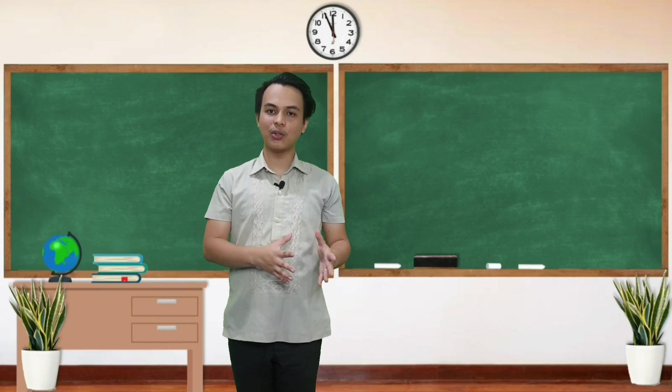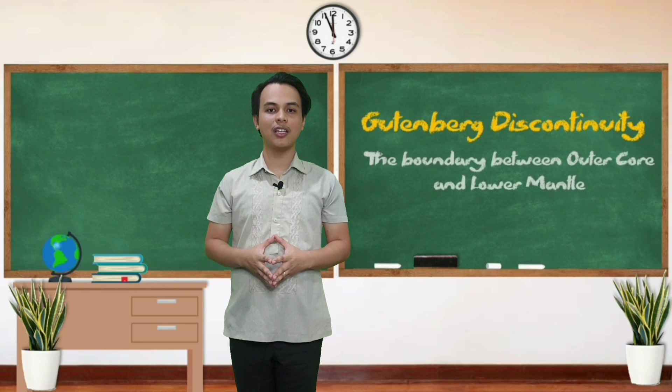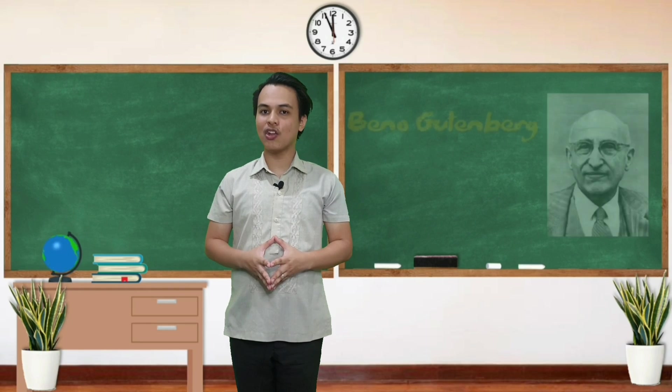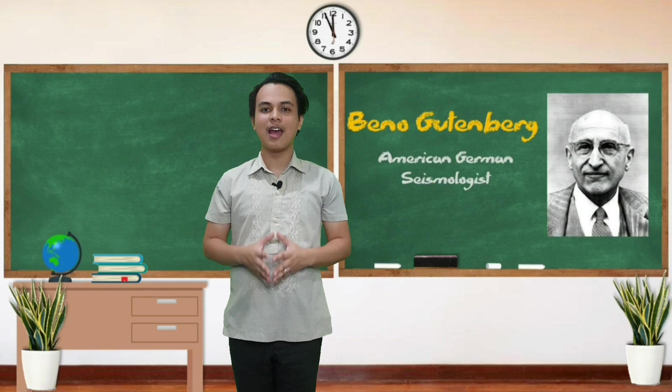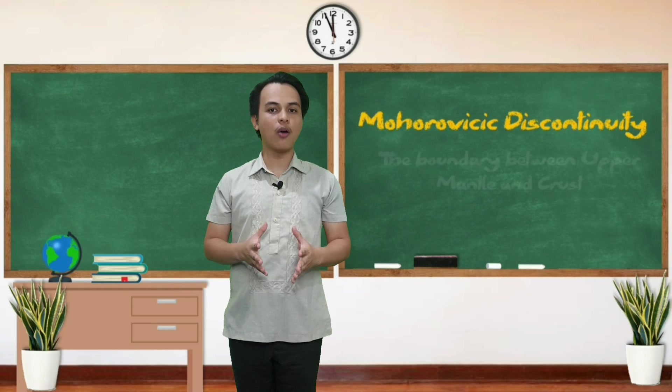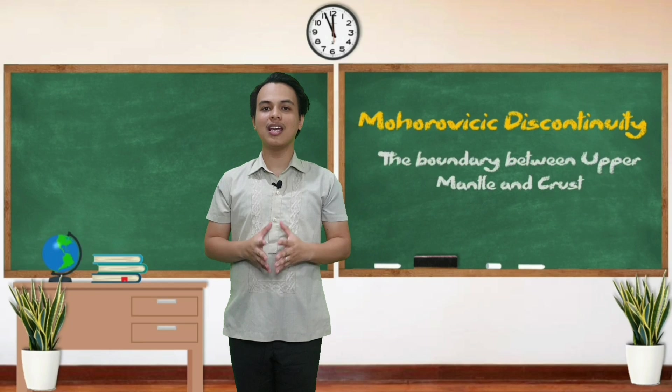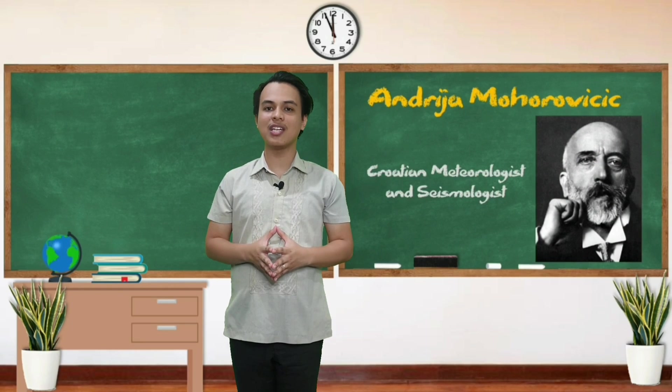Ang boundary between the outer core and lower mantle ay tinatawag natin na Gutenberg discontinuity, named after Benno Gutenberg na isang American-German seismologist. Ang boundary naman between upper mantle and crust na siyang susunod natin i-didiscuss ay tinatawag na Mohorovicic discontinuity, named after Andrija Mohorovicic na isang Croatian meteorologist and seismologist.